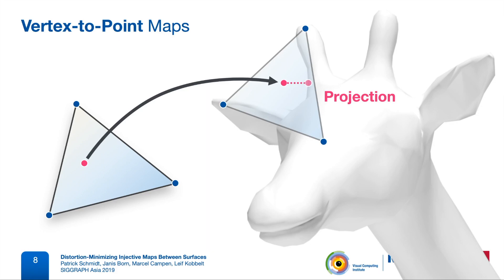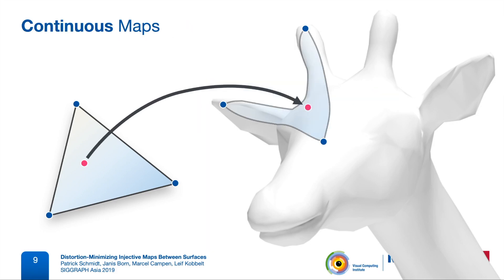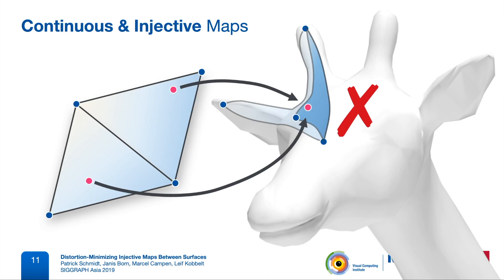So instead of this, we would like to construct a continuous map in the first place, that directly maps each point to the target surface. In addition, we want this map to be injective, so that no two points map to the same target location, and this includes that we don't want triangles to fold over.